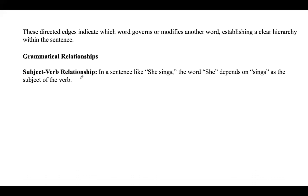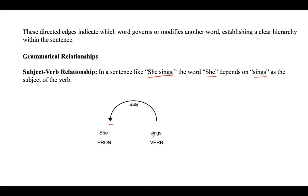The first is the subject-verb relationship. For example, in the sentence 'she sings', the word 'she' depends on 'sings' and is the subject of the verb.